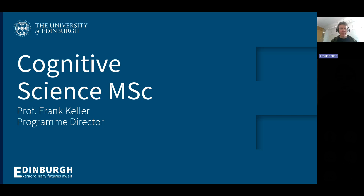Hello, everyone. Welcome to this session, which is a virtual overview of the master's degree in cognitive science. My name is Frank Keller. I'm a professor here in the School of Informatics. My area is computational cognitive science. In particular, I'm interested in modeling language processing and visual processing as well.